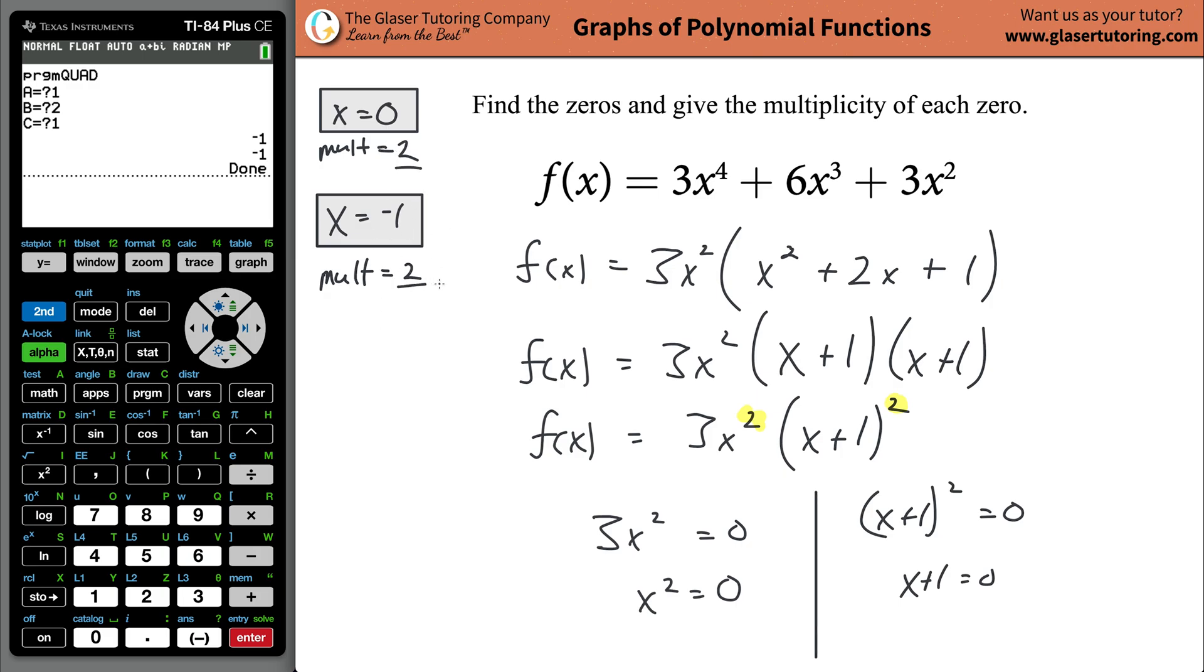So notice how we have even multiplicities on each, so we should expect similar behavior on each. So what you can do is you can now plot this function if you wanted. You can do 3x raised to the 4th, then plus 6x raised to the 3rd, and then plus 3x squared. And go to zoom. I'm going to go to zoom standard. So I'm going to zoom in now. Hit 2. Hit enter.